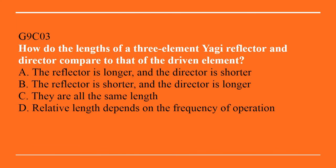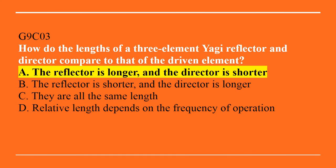G9C03: How do the lengths of a three-element Yagi reflector and director compare to that of the driven element? A. The reflector is longer and the director is shorter. B. The reflector is shorter and the director is longer. C. They are all the same length. Or D. Relative length depends on the frequency of operation. The answer is A — the reflector is longer and the director is shorter.